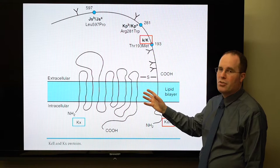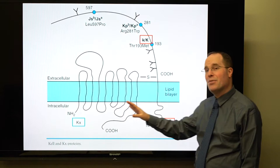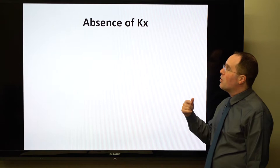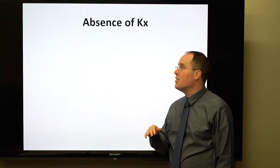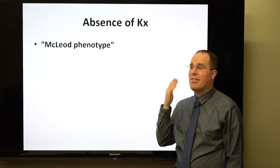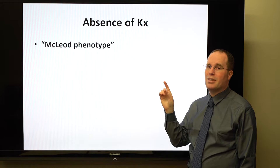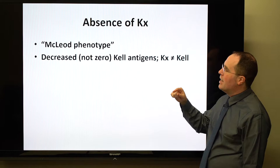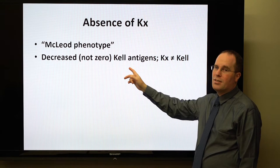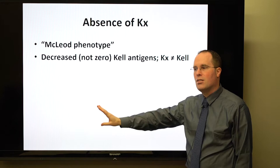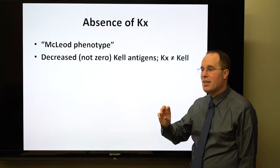There is also the Kx antigen system, which is distinct from the Kell system. Kx is encoded on the X chromosome and acts like a supporting structure for Kell antigens. If you lack the Kx antigen — the so-called McLeod phenotype — Kell antigen expression is decreased (not absent). This is different from Kell null, which is the complete absence of Kell antigens.